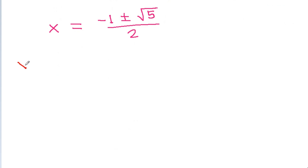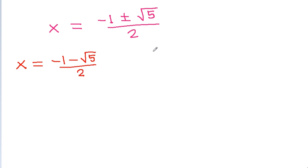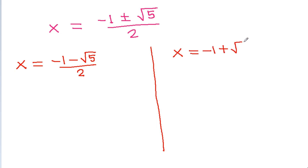So we get two candidate solutions: x equals (-1 minus √5) divided by 2, and x equals (-1 plus √5) divided by 2.